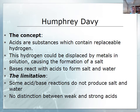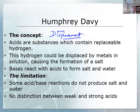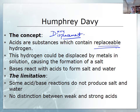The next idea to look at is Humphrey Davy. The important thing about Davy is that his definition is about displacement. Certain types of metals can cause the displacement of hydrogen from an acidic substance — that's how Davy defined acids: acids are substances which contain replaceable hydrogen. Specifically, hydrogen is displaced from the solution. When a metal is added to an acid, hydrogen comes out as hydrogen gas and a salt — the metallic anion of the acid — is formed.